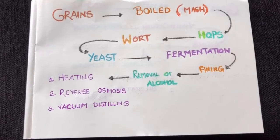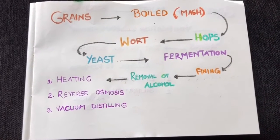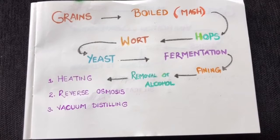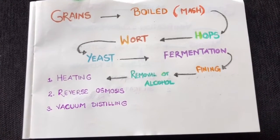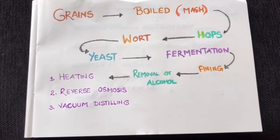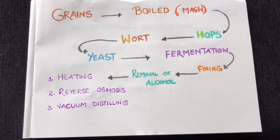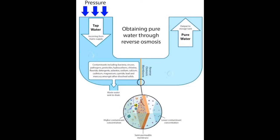If not heating, then we can use reverse osmosis or vacuum distillation. Reverse osmosis is essentially the way we filter. Beer passes through membranes with very small pores, which separates the alcohol and water from the sugary, flavorful substance. To make zero alcohol beer, we simply mix water back into that flavorful concentrate, and your non-alcoholic beer is ready.